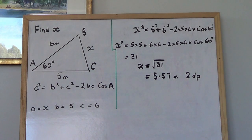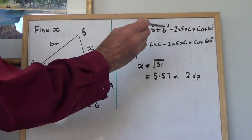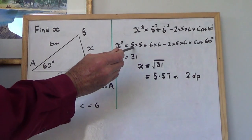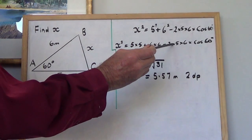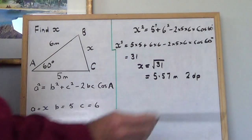Now, if you're going to work it out on your calculator, what you do is you expand that out. So you rewrite it like this: that's 5 times 5 plus 6 times 6 minus 2 times 5 times 6 times cos 60.